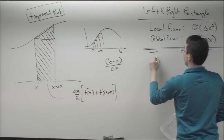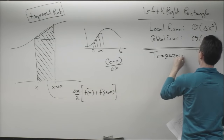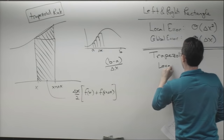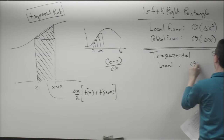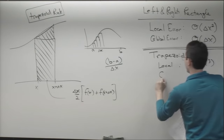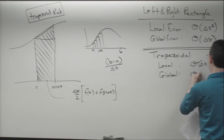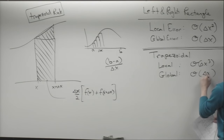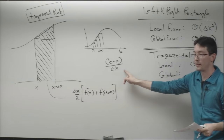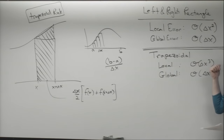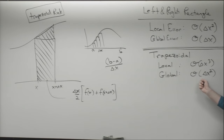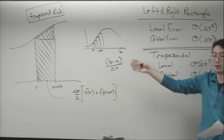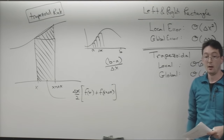Trapezoidal integration has a local error of order delta x cubed, which gives a global error of delta x squared — for exactly the same reason, because I'm adding up 1 over delta x of these local errors. So trapezoidal is a lot better: for the same delta x, I get way more accurate solutions because I'm averaging out the errors and getting higher-order accuracy.